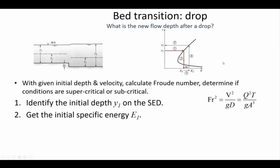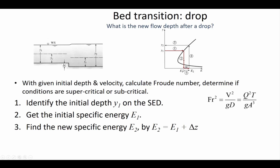Now because of the drop, the energy at 2 is going to be higher. The energy at 2 is the energy at 1 plus delta Z. The drop added energy to the water because the channel bottom is lower than it used to be — what used to be potential energy is now in the specific energy. Since specific energy is measured with respect to the channel bottom, when the channel bottom goes down, specific energy goes up. On the figure, that means you shift sideways by the amount of delta Z.